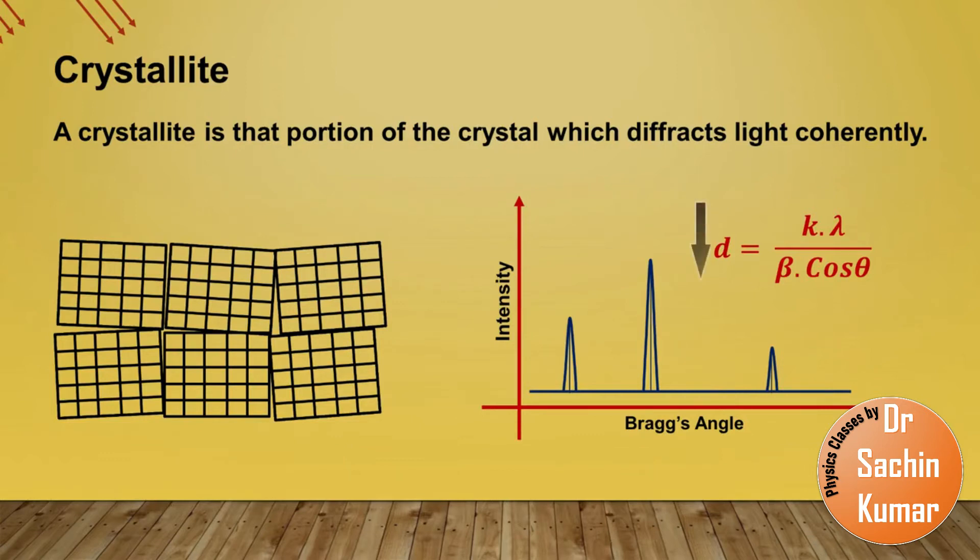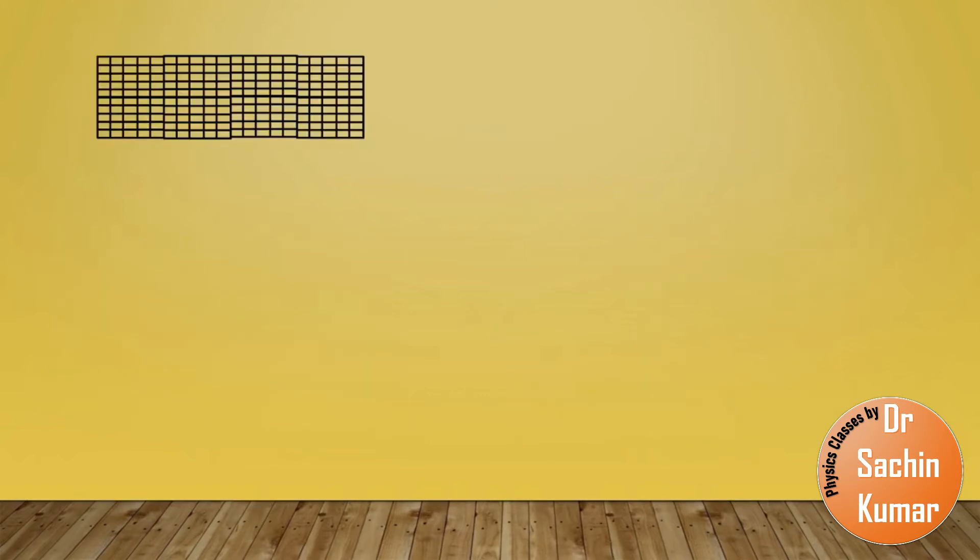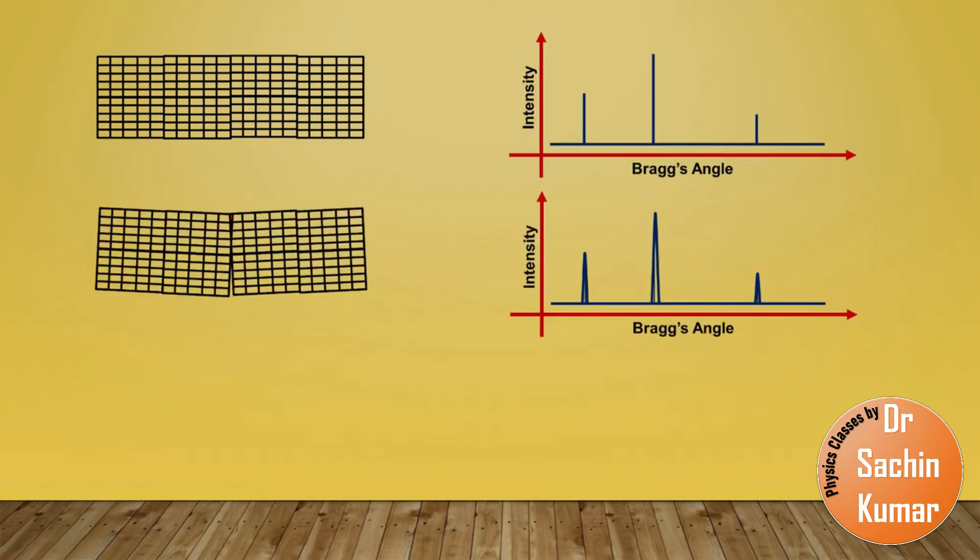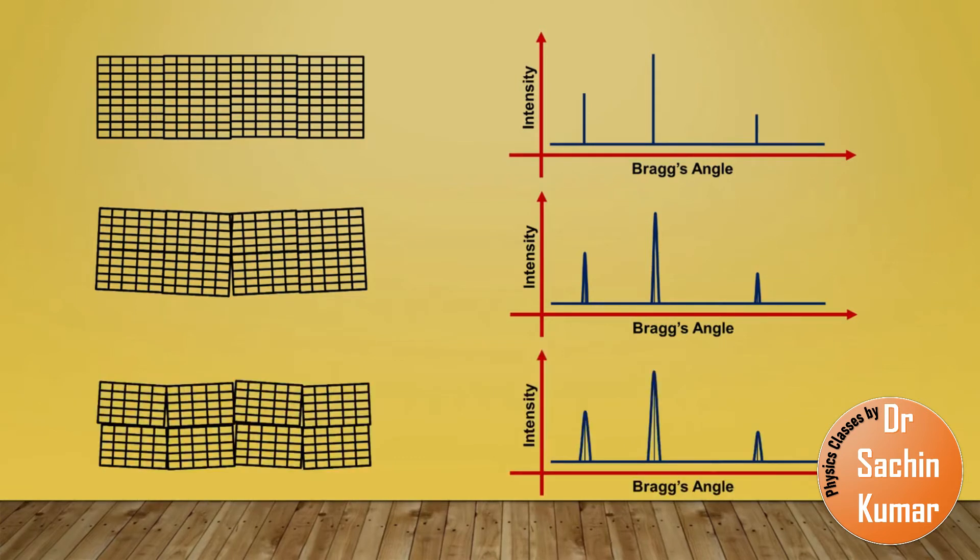So as a summary we can say that if the crystallite is big, then we observe particular defined sharp peaks in our XRD pattern. As the size of crystallite decreases, these peaks get a little bit broader, and if we further decrease its size we will observe further broadness in these peaks. So in this way the crystallite is defined as the average size of the portion which diffracts light coherently in XRD. Now let us move towards the definition of a grain.